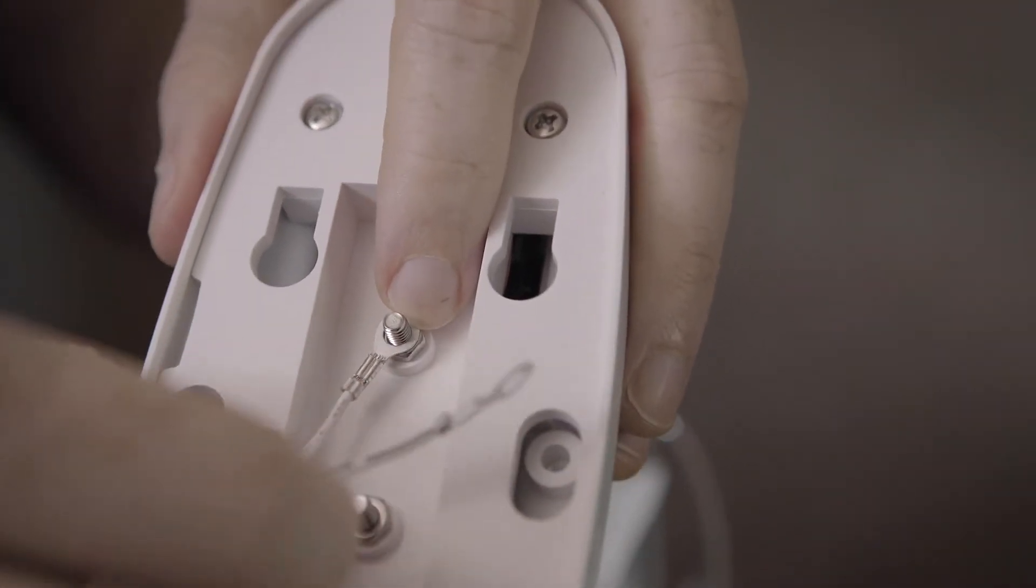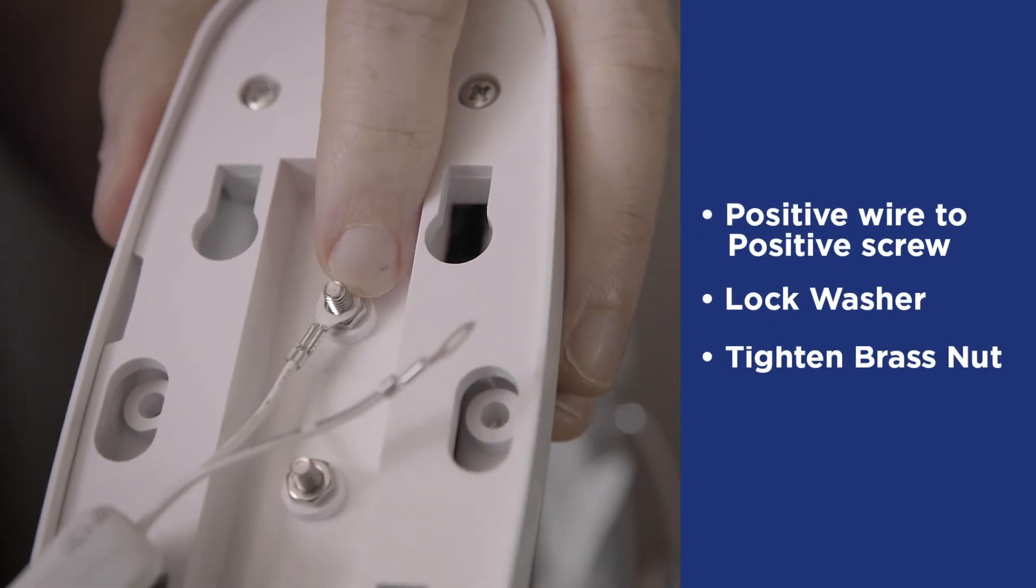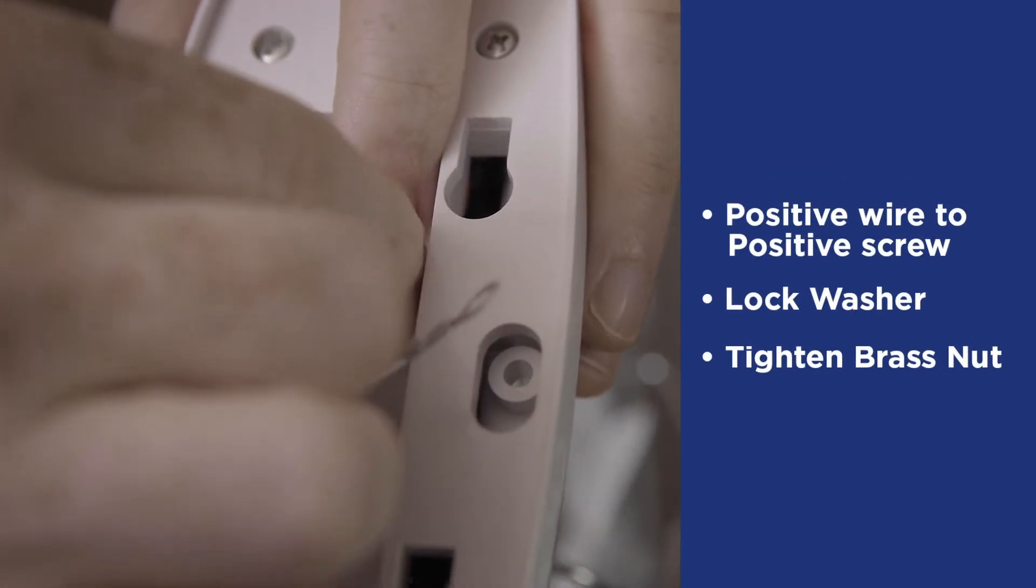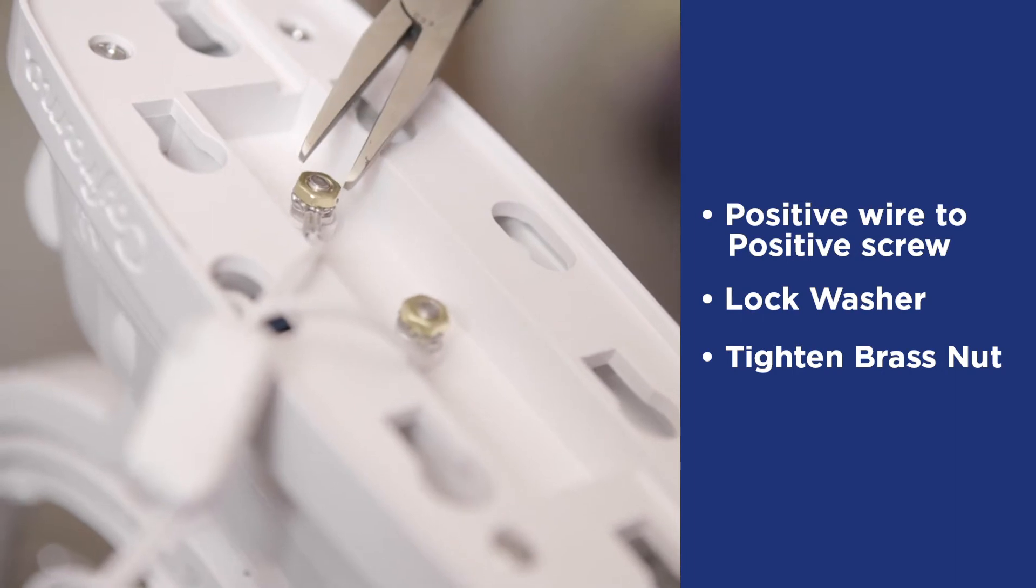Attach the provided wire to the fan by placing the positive marked wire to the positive screw. Secure with the lock washer, then the brass nut, and tighten well with pliers.